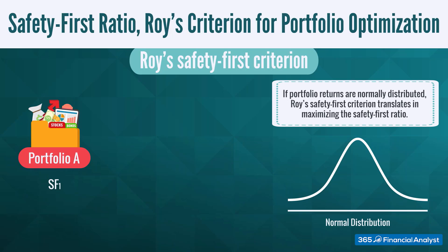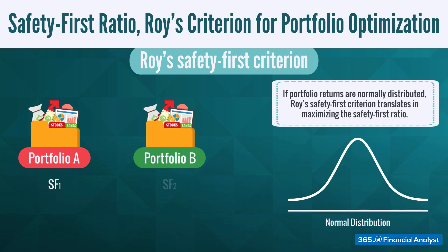To satisfy Roy's criterion, in case we have a second portfolio, we would need to calculate its safety first ratio, then compare the results of the two portfolios given, and choose the one that has a more favorable ratio.